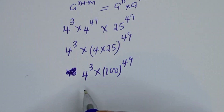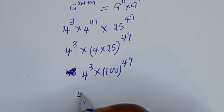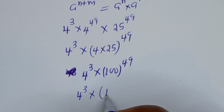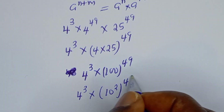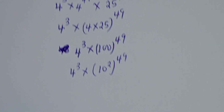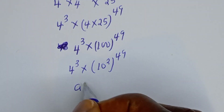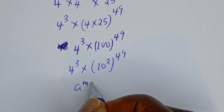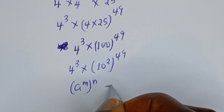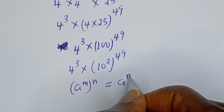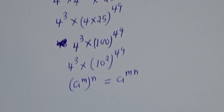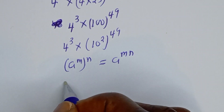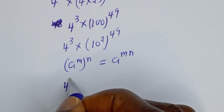Then 100 can be written as 10 squared, so we have 4 to the power of 3 multiplied by 10 squared to the power of 49. Using the rule that A to the power of M to the power of N equals A to the power of M times N, this gives us 10 to the power of 98.